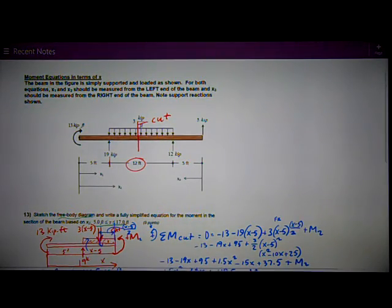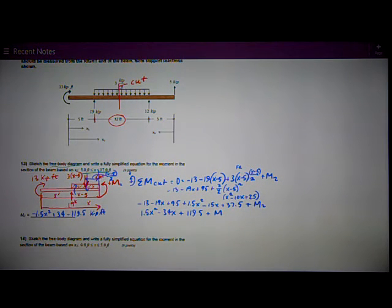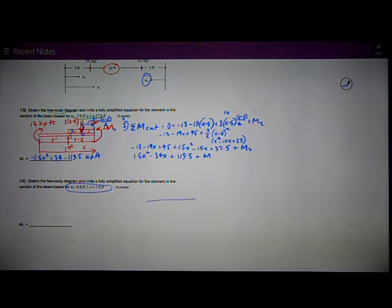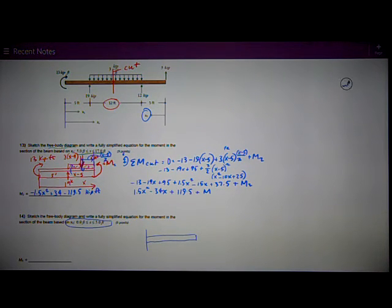I am asked for an equation for x3 from the right end in the distance between 0 and 5. So I've got x3 right here. My free body diagram is very simple. Looks like this. Make my cut. There's the beam. I have 5 kips up. It's my only force on that segment of the beam. x is measured from the right end, so x is always the distance to the cut.